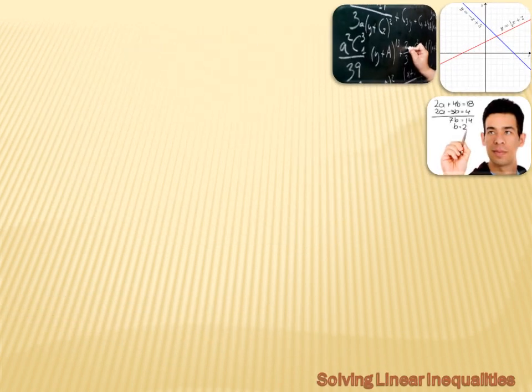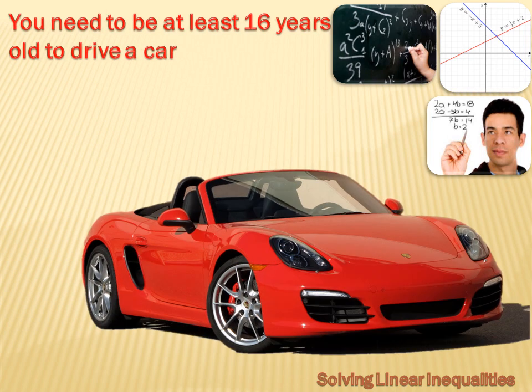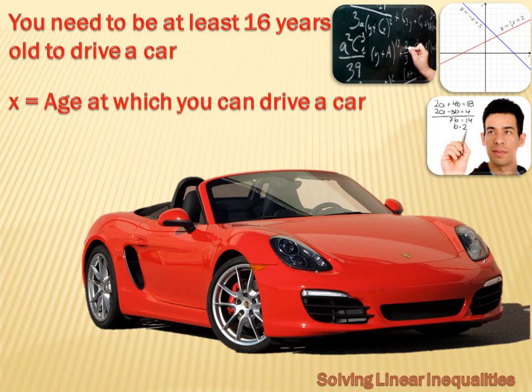Let's do a quick review of inequalities. Math is just a way to model and describe the real world, and there are inequalities in the real world. For instance, you need to be at least 16 years old to drive a car — that's an inequality. It doesn't say exactly 16; it says at least 16. If we let x equal the age at which you can drive, then mathematically x must be greater than or equal to 16.